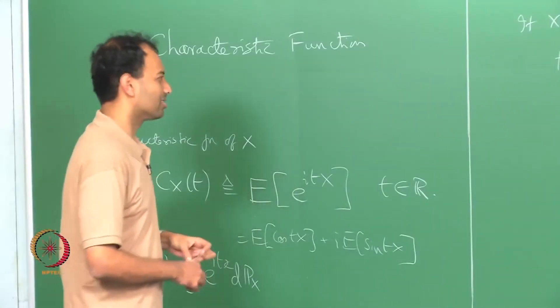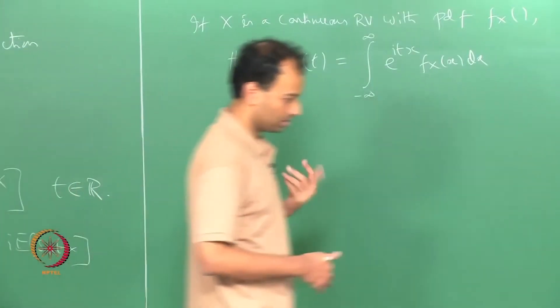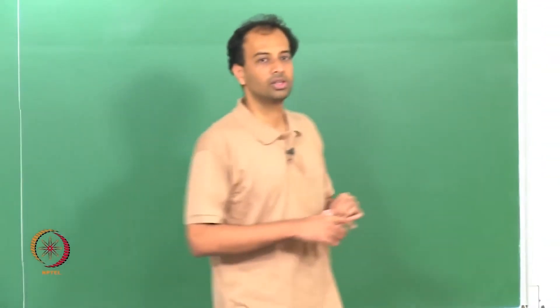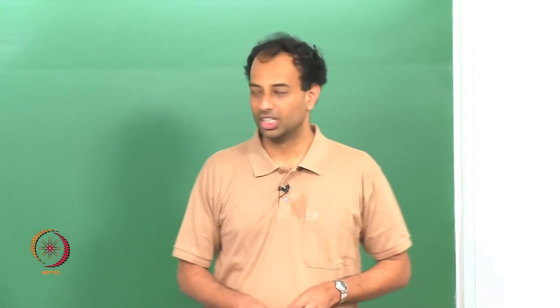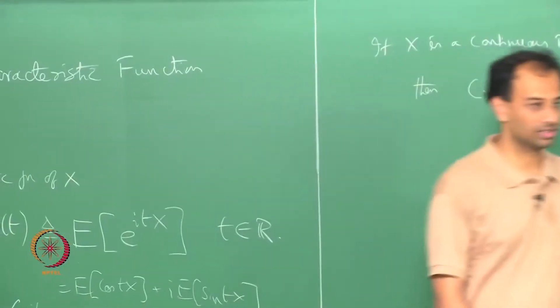So why do you need this, and why not just use the moment generating function? The main reason is that the moment generating function does not always exist outside s equals 0. As we saw in the case of a Cauchy random variable, the moment generating function was undefined for all other arguments, but the characteristic function is always well defined and finite for any random variable.